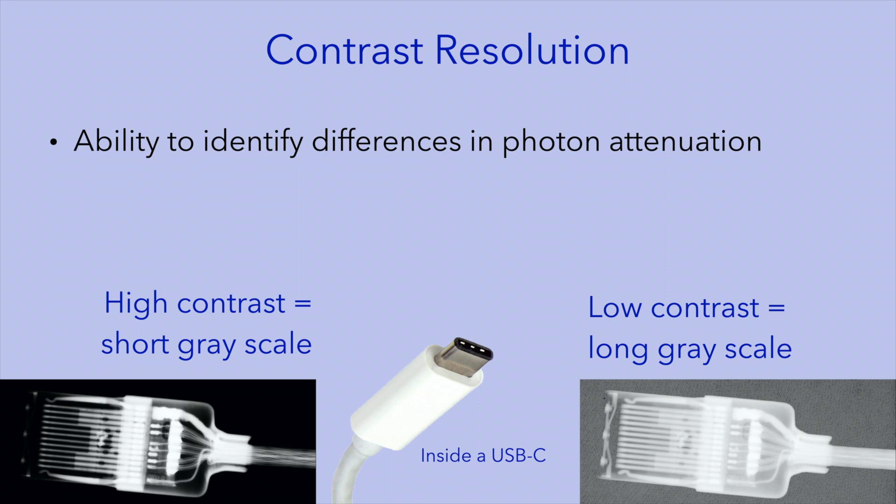The next measure of image quality is contrast resolution, which refers to the ability of the imaging system to identify differences in photon attenuation. In a high contrast image, the difference between radiopaque and radiolucent structures is accentuated; you have fewer shades of gray, and it is thus referred to as a short grayscale image. On the other hand, a low contrast image has more shades of gray, and the distinction between radiolucent and radiopaque structures is less distinct.